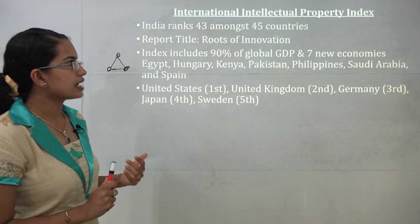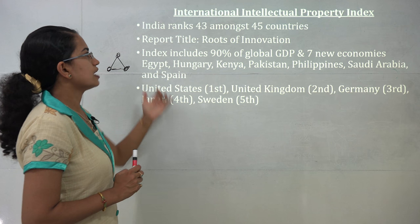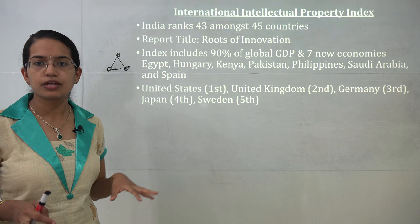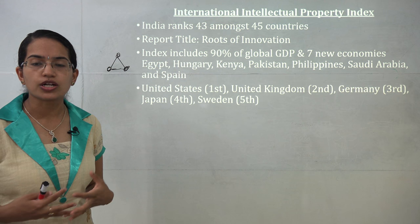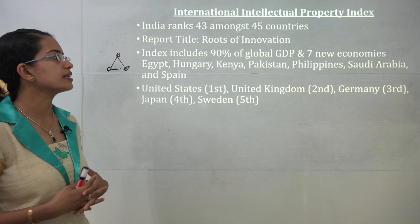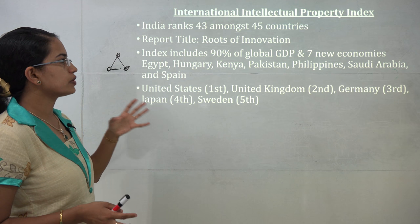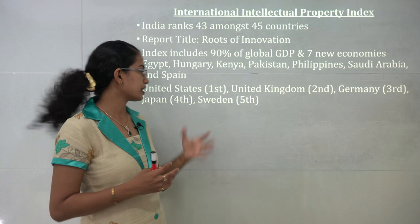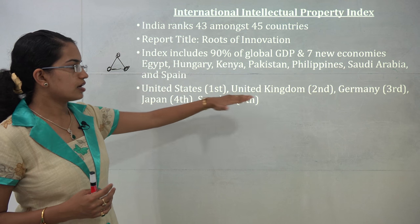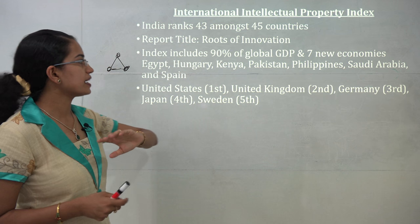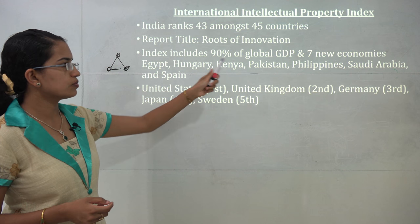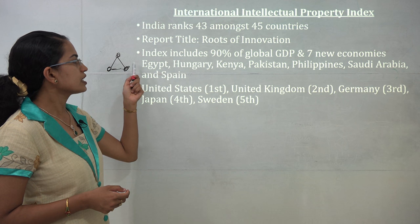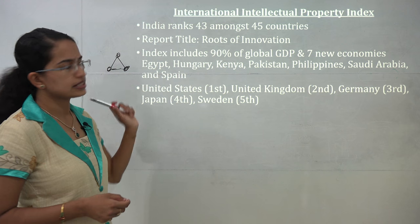The International Intellectual Property Index is one where India performs extremely poorly — ranking 43 out of 45 countries. The title of the report was 'Roots of Innovation,' indicating a lack of innovation from India. The US, UK, and Germany are the top rankers. The index covers 90% of global GDP, and 7 new economies included this time are Egypt, Hungary, Kenya, Pakistan, Philippines, Saudi Arabia, and Spain.